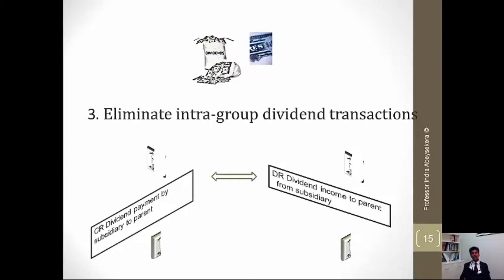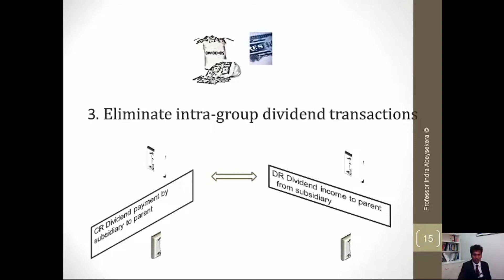Hello there, Art Officer Indravis Sekhara. One of the learning tools in this workshop is to learn how to eliminate intra-group dividend transactions. It is when the subsidiary declares or pays dividend to the parent that we need to eliminate those transactions. It is not when the parent pays dividends, because when the parent pays dividends those dividends go to outsiders, outside the economic entity. We don't need to eliminate those dividends. But when the subsidiary pays dividends, we must eliminate them as inter-group transactions.